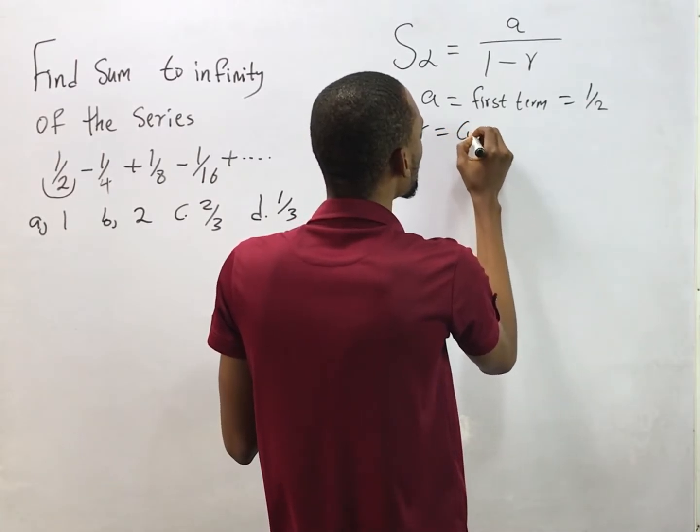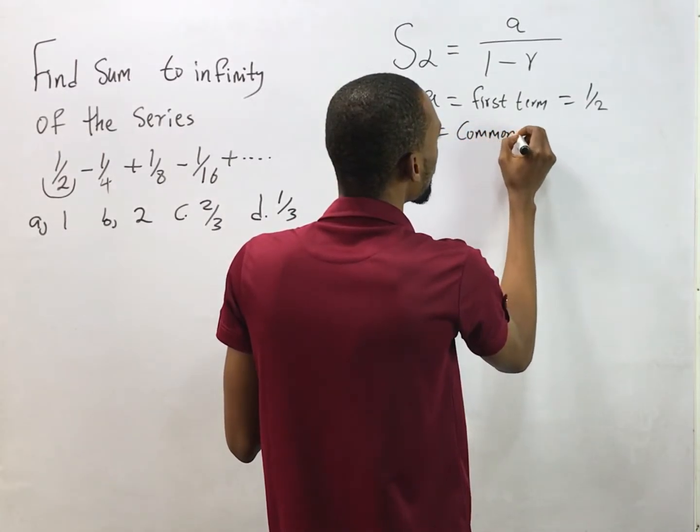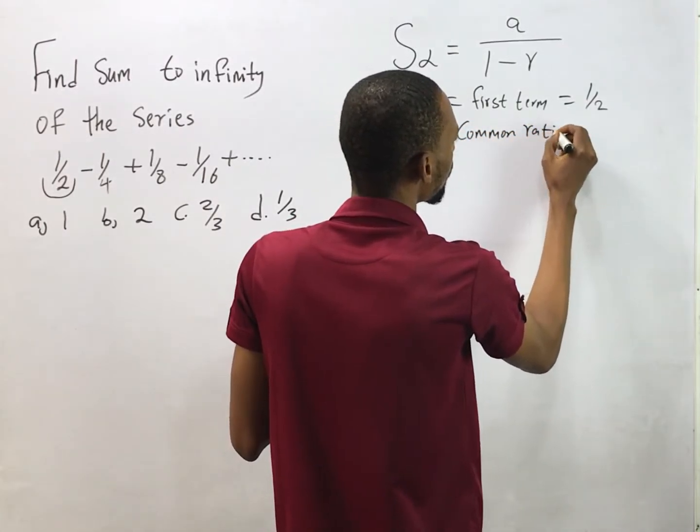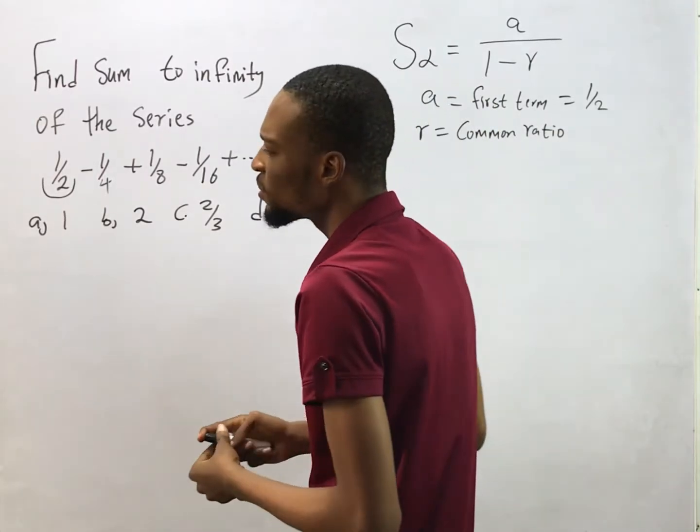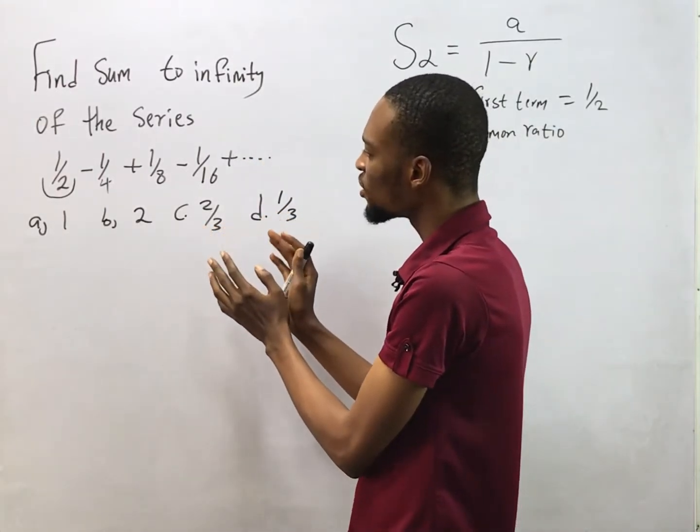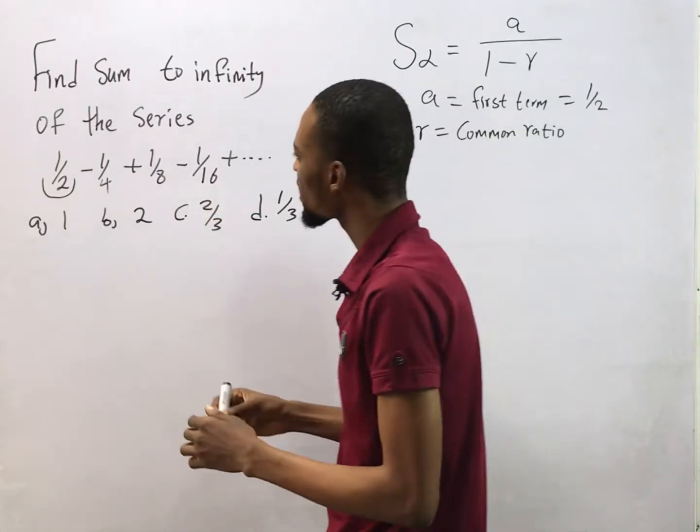r is the common ratio. Common ratio is the value you get when you divide a value by the previous value.